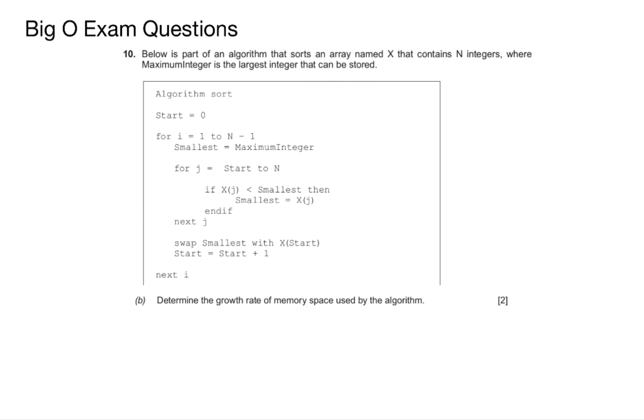Question 10b expects you to use the same algorithm but this time determine the growth rate for memory space used by the algorithm. So here it's all about storage. And if you read the question it says below is part of an algorithm that sorts an array named x that contains n integers, where maximum integer is the largest integer that can be stored.